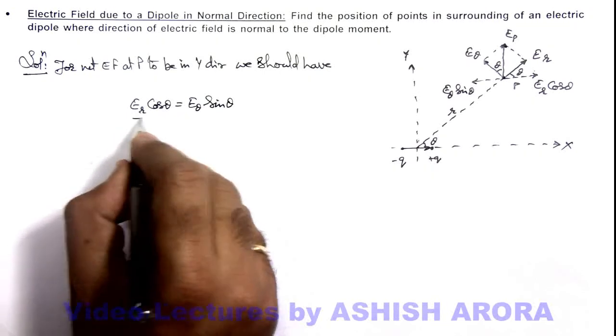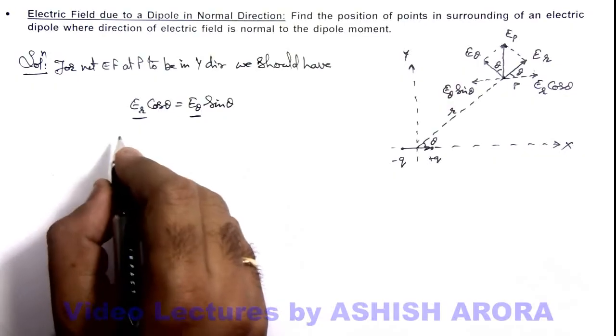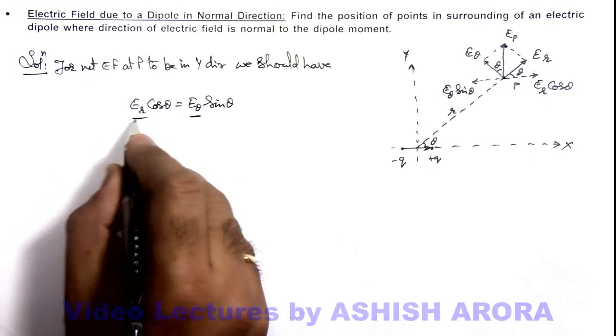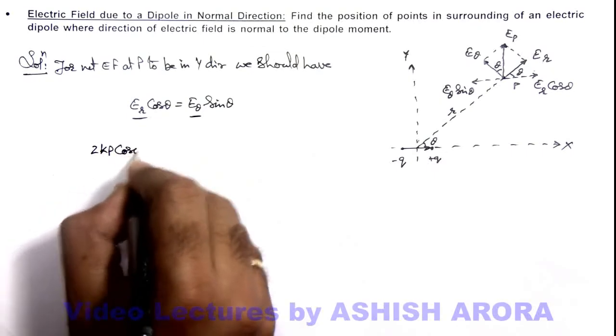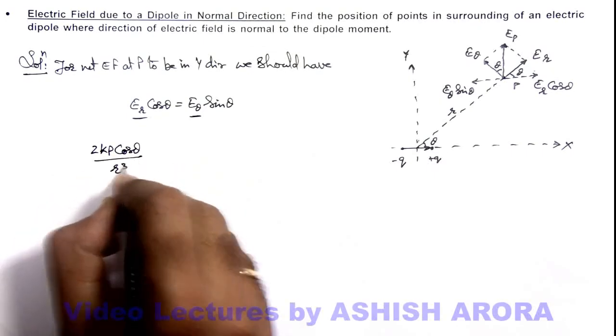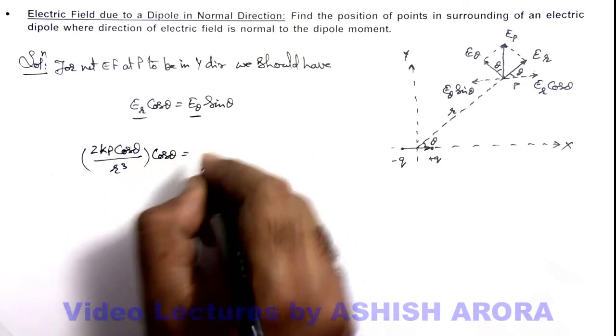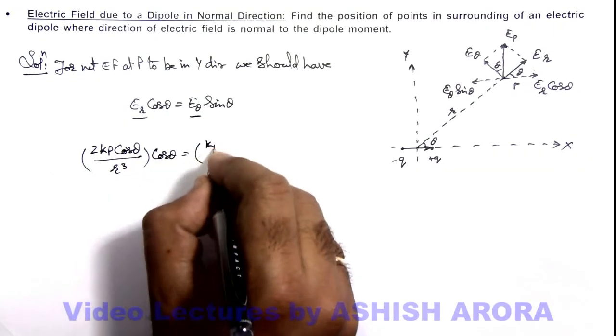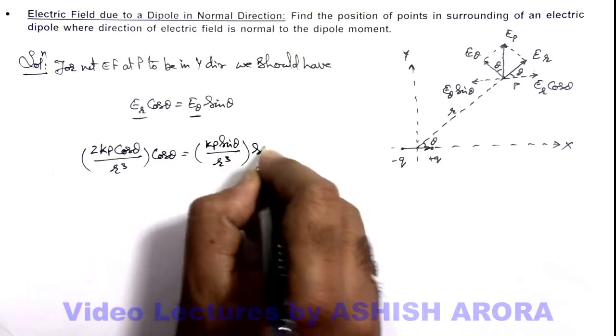If we substitute the value of Er and E theta which we already studied earlier in videos, we can write the value of Er in this situation is 2kp cos theta by r cube, multiplied by cos theta, equals to E theta, we can write as kp sin theta by r cube multiplied by sin theta.